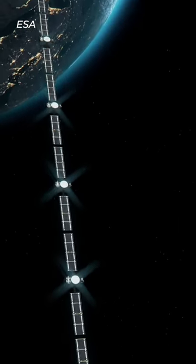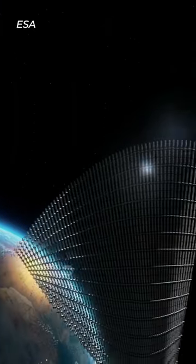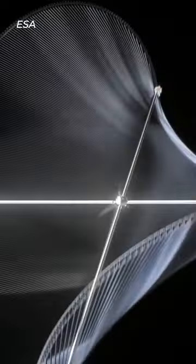The European Space Agency's Solaris Initiative proposes placing solar power satellites in orbit around the planet to capture solar energy 24-7.